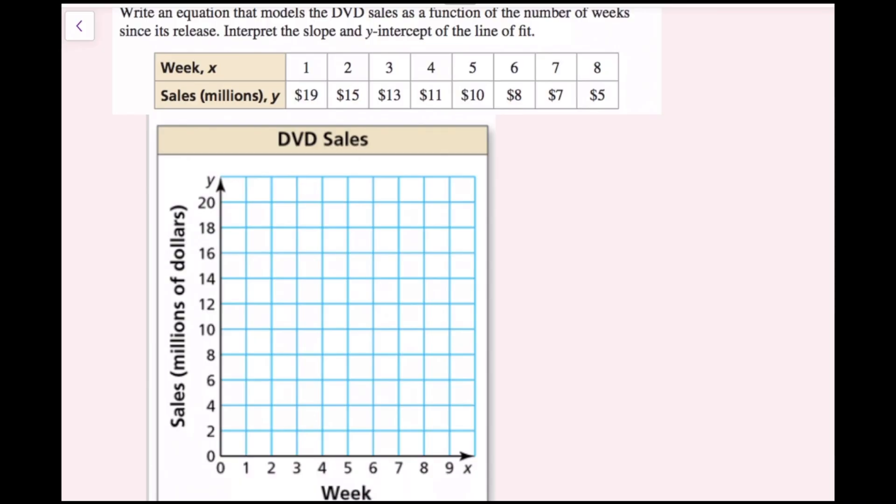I'm going to plot all these ordered pairs. One week is 19, so that's right here. Two weeks is 15 million dollars. Three weeks is 13 million dollars. Four weeks is 11 million dollars. Five weeks is 10 million dollars. Six weeks is 8 million dollars. Seven weeks is 7 million dollars. And eight weeks is 5 million dollars. Now we've plotted our data on this graph.